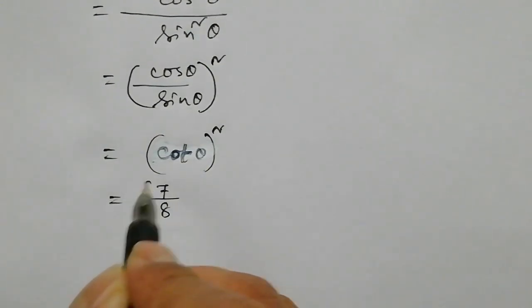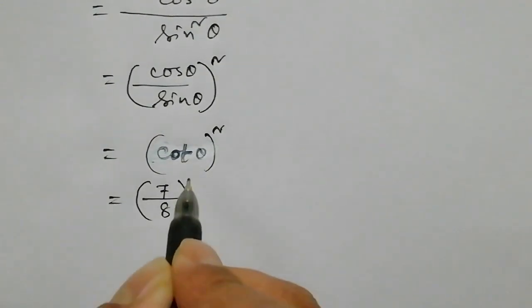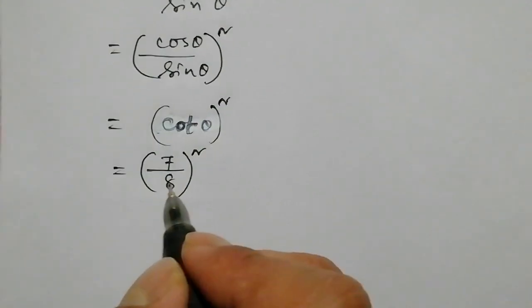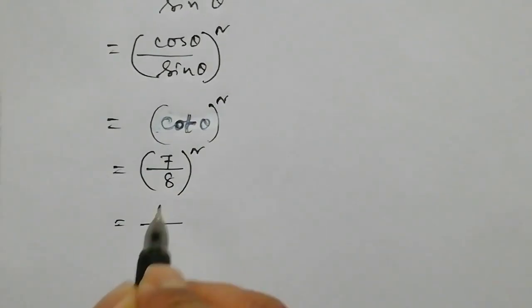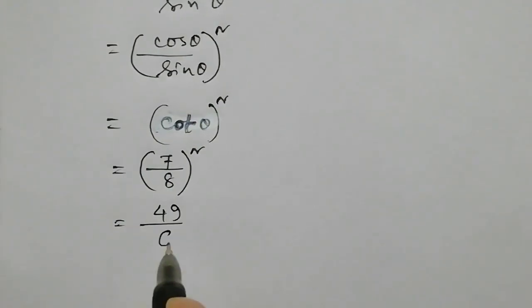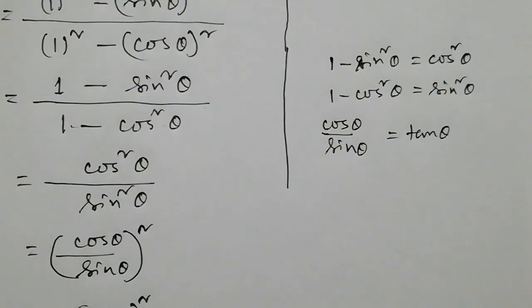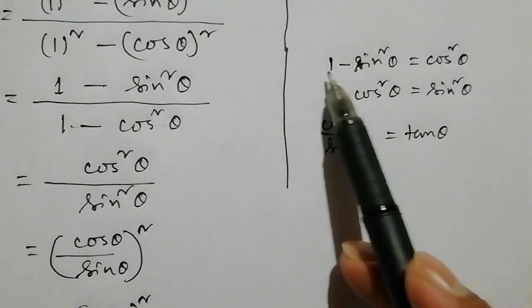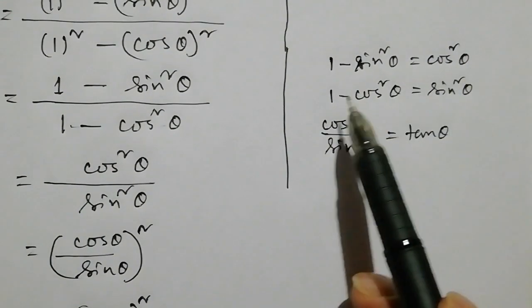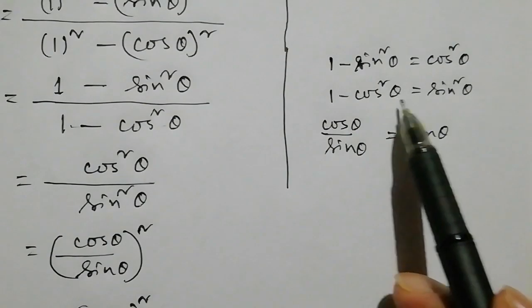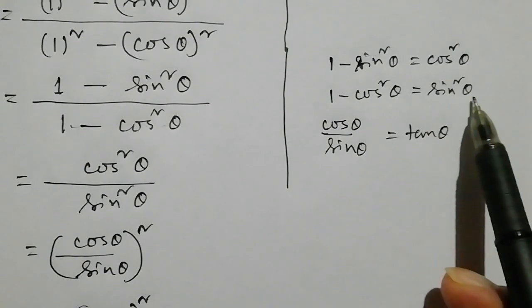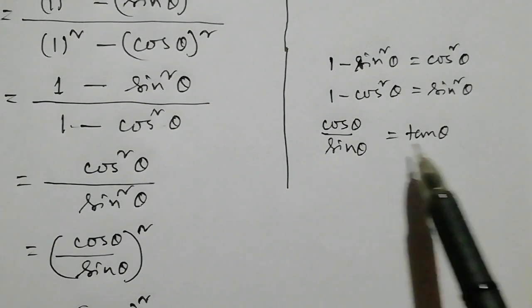The value is 7 by 8. Squaring both sides gives 7 squared by 8 squared, which is 49 by 64. Using the identities: 1 minus sin square theta equals cos square theta, and 1 minus cos square theta equals sin square theta, and cos theta divided by sin theta equals cot theta.